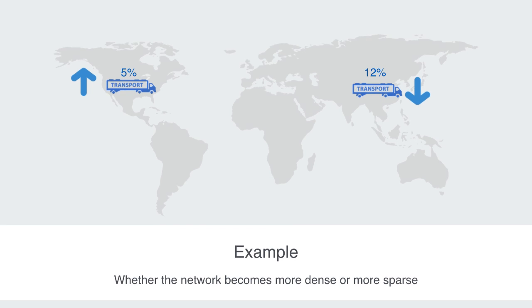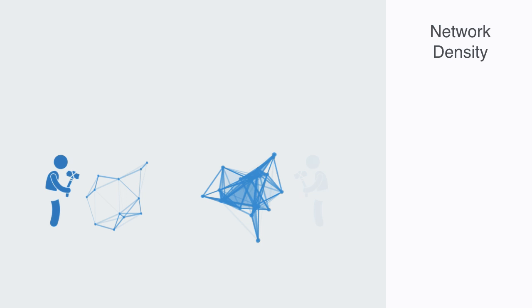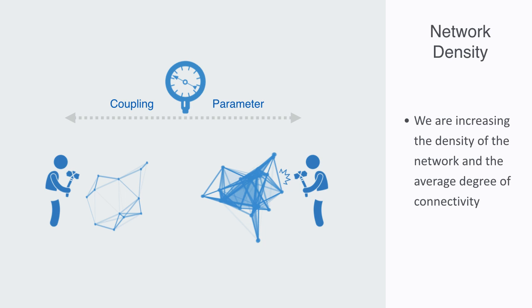One way of quantifying this concept of overall connectivity to a network is with reference to its density. The density of a network is defined as a ratio of the number of edges to the number of possible edges, and this will also correlate to the average degree of connectivity to the nodes in the network. So when we increase our coupling parameter, we are increasing the density of the network and the average degree of connectivity.